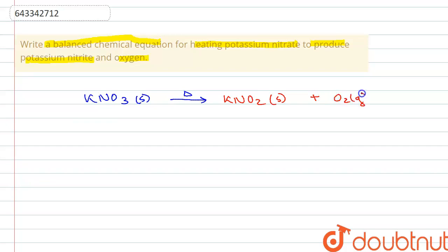Now let's see if the reaction is balanced or not. On the reactant side we have one potassium atom and on the product side also we have one potassium atom.